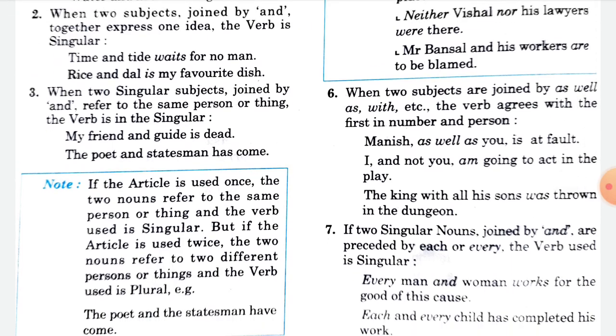When two subjects are joined by 'as well as', 'with', etc., the verb agrees with the first subject in number and person. The agreement is with the first subject, not the second.